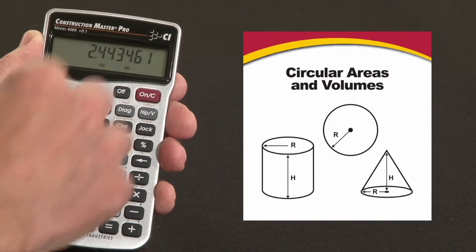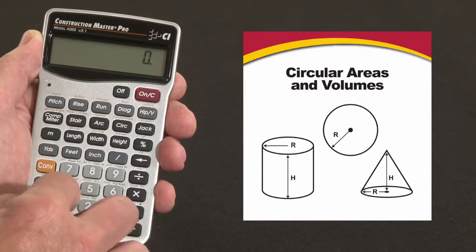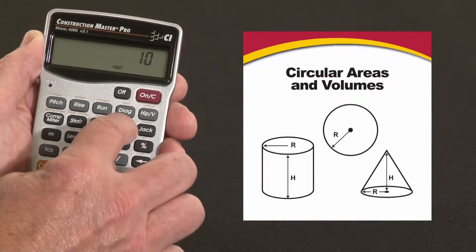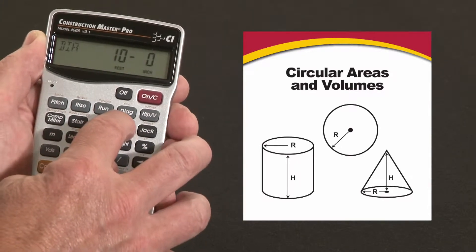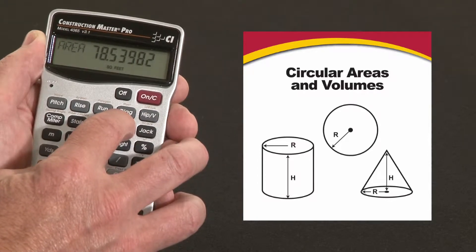Say you've got a patio with a semi-circular edge on it with a 10-foot diameter circle, and I want to figure out the arc length. 10 feet is my diameter. Press it again—there's my surface area. It shows me the surface area of the whole patio, the whole circle.